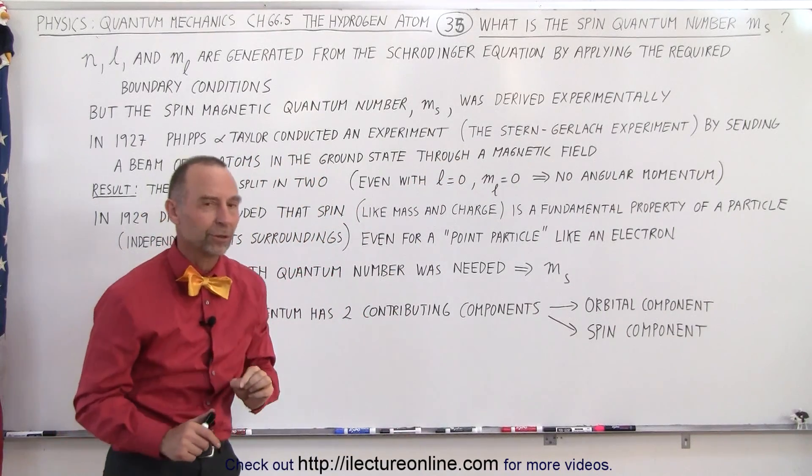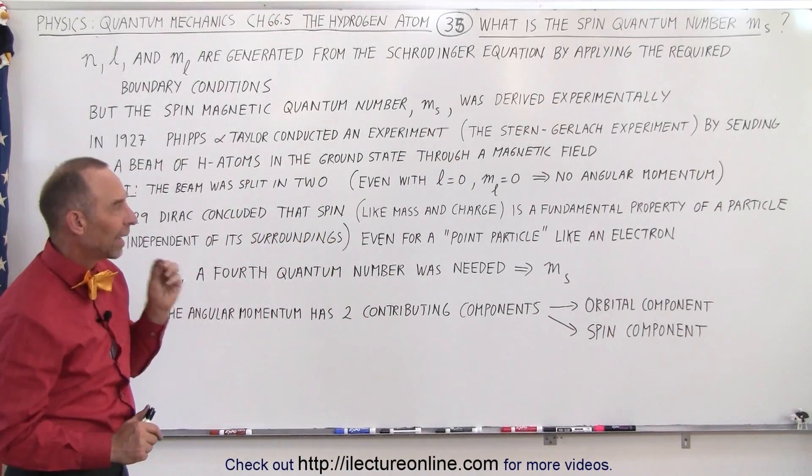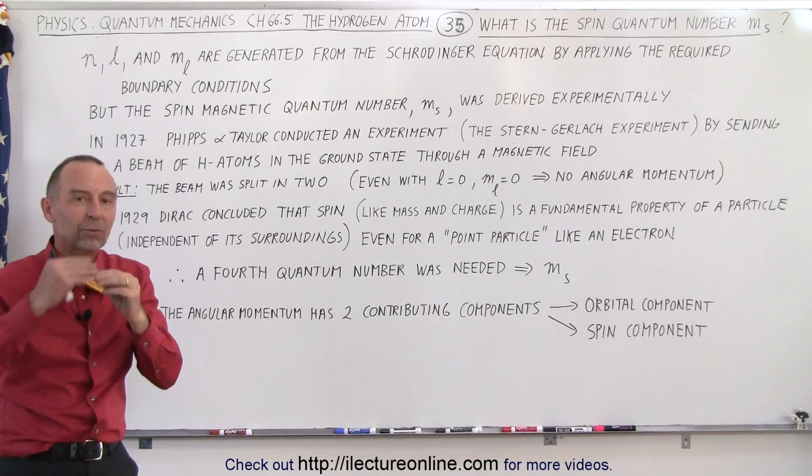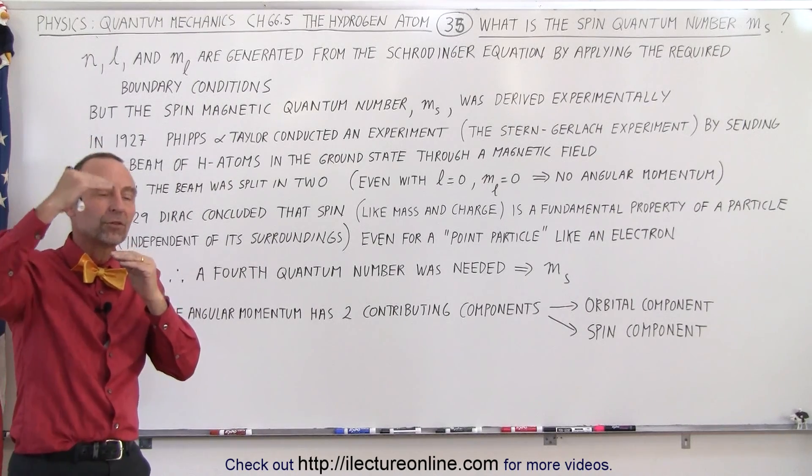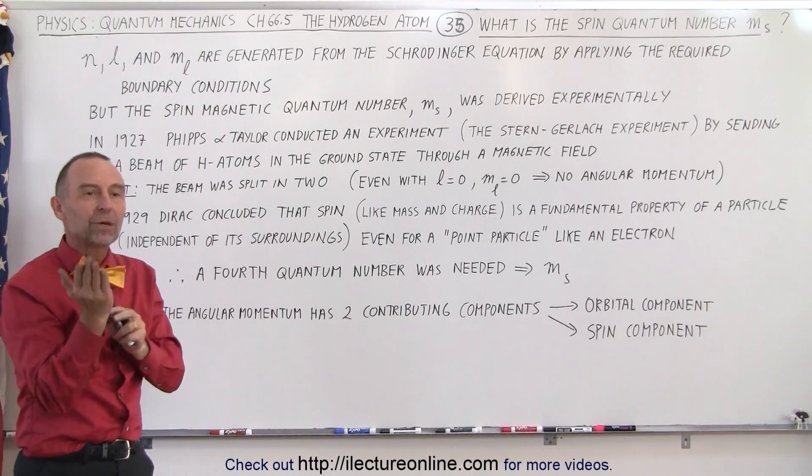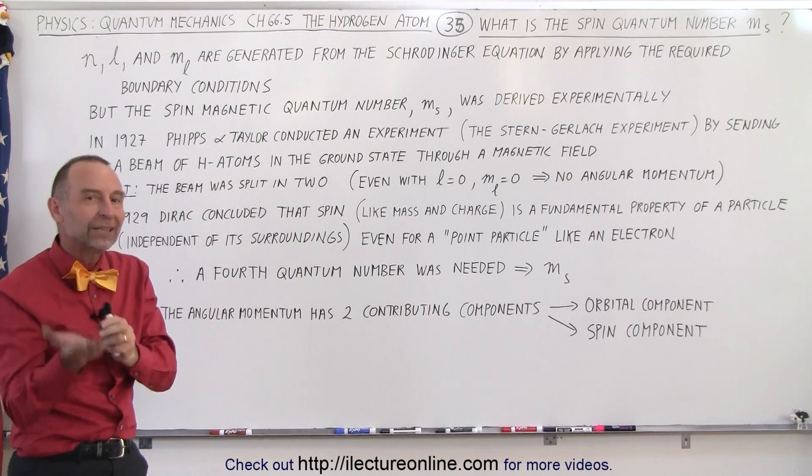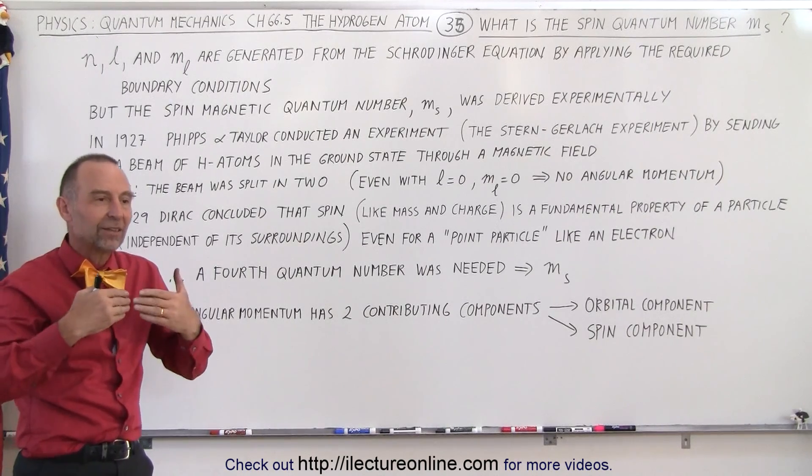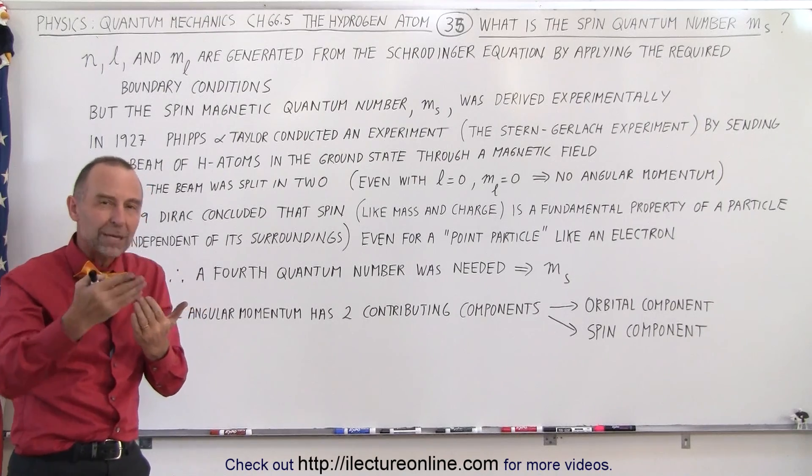Why was that so important? Because when hydrogen atoms are not in the ground state, when the electrons are in a higher orbit, their angular momentum could actually have different orientations. And so therefore,